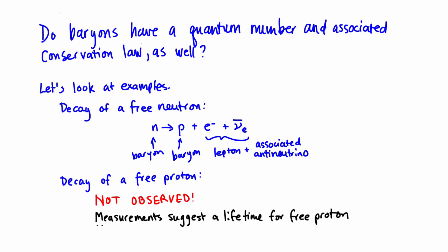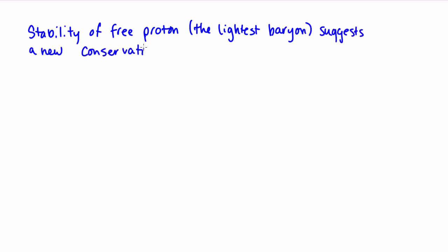But current measurements suggest that the mean lifetime of a proton would have to be longer than 10 to the 29 years if it is indeed unstable. To put this in perspective, the universe is estimated to be just under 14 billion years, or 1.4 times 10 to the 10 years old. So that leaves us for now with a new law: baryon number must be conserved.